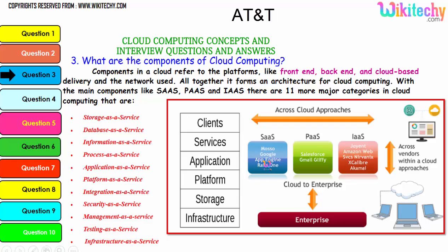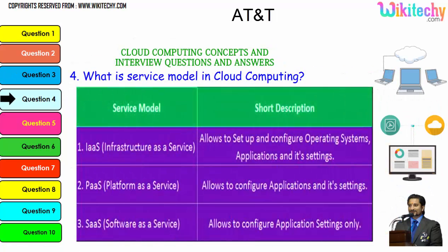For Software as a Service, examples are Google App Engine and Microsoft Azure. For Platform as a Service, typical examples are Gmail, and Salesforce. For Infrastructure as a Service, there are many companies such as Amazon Web Services, Rackspace, Akamai, and others. Now the question is: what is the service model in cloud computing?